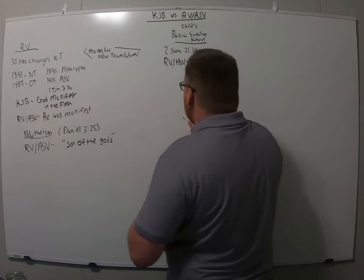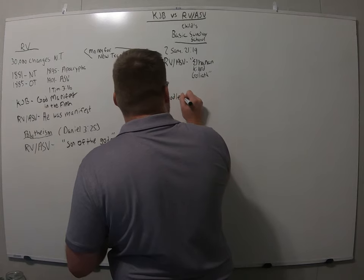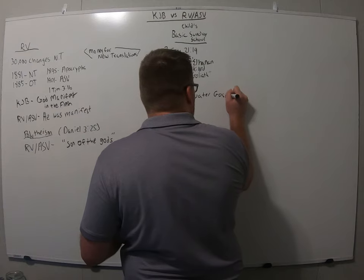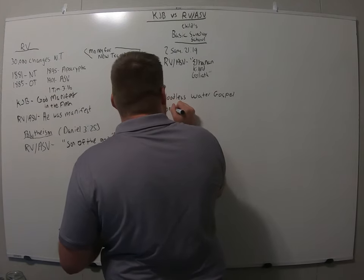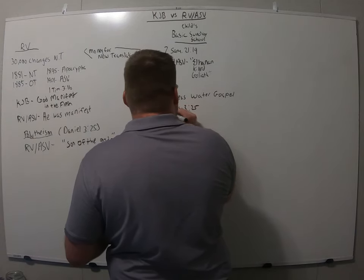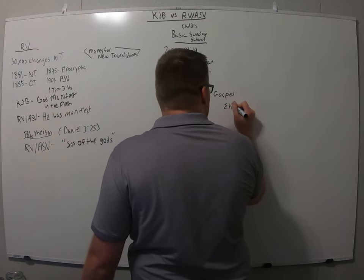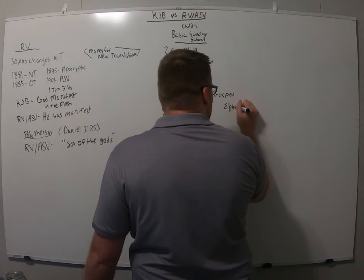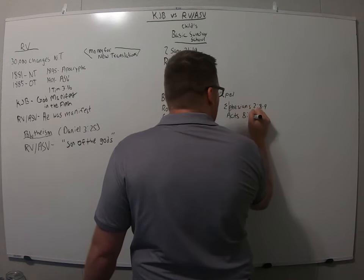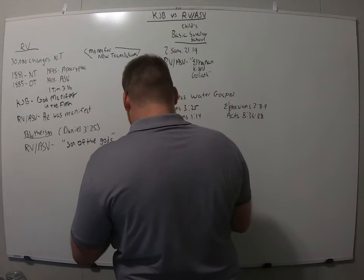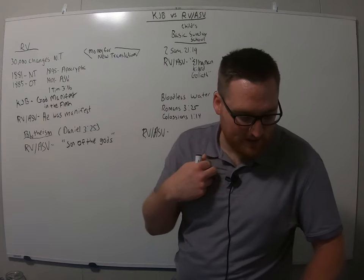Another thing is in these Bibles, and this is for all modern Bibles, the gospel is turned into the bloodless water gospel. We're going to compare four verses here. We're going to look at Romans 3:25 with Colossians 1:14 and then we're going to look at Ephesians 2:8-9 and compare it up to Acts 8:36 through 38. And then we'll see what the RV and the ASV have done.